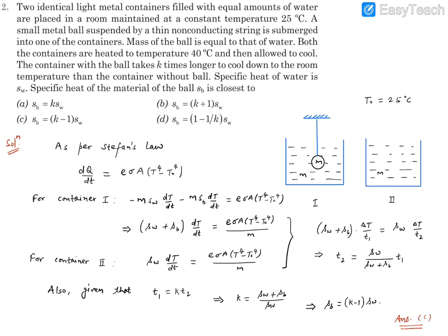We can apply this formula for container 1. For container 1, this heat loss will be equal to m*S*delta T/t. Here, the water will be losing heat as well as the ball will be losing heat. So the heat lost by the water plus heat lost by the ball per unit time is equal to the total heat loss. We can take out m, which is common because both water and ball are of equal mass. We will get specific heat of water plus specific heat of ball times dT/dt is equal to this number.